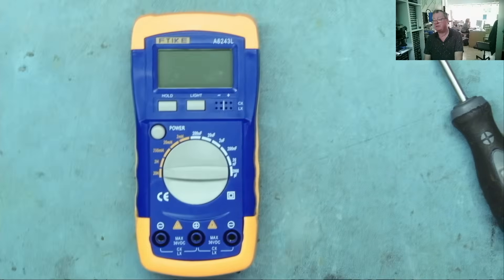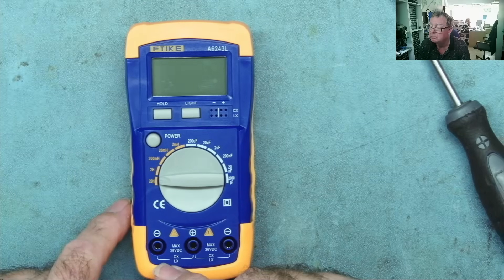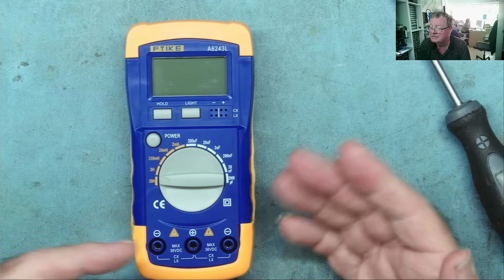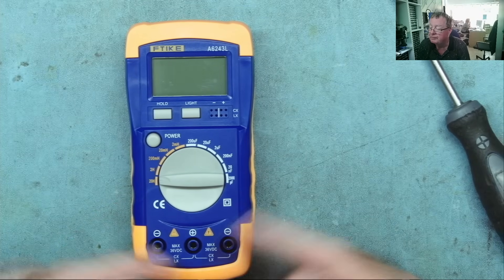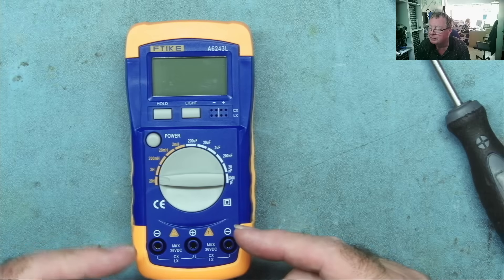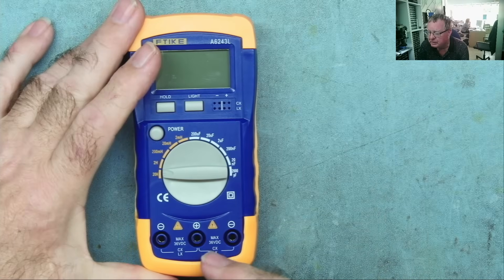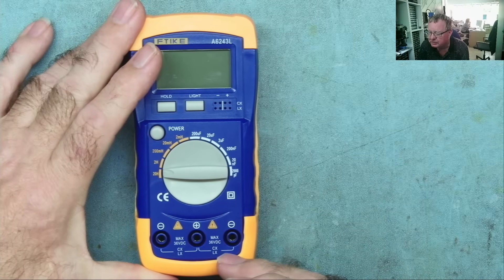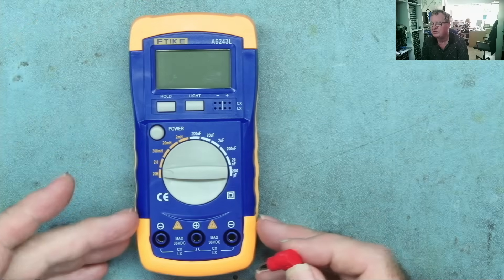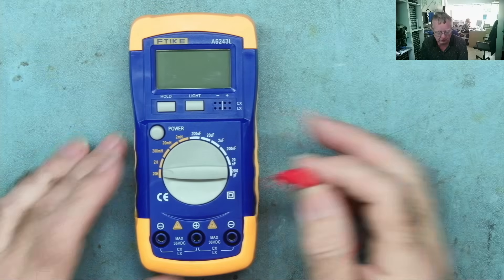You can plug little inductors and capacitors into here. CXLX plus minus, interestingly. Maximum 36 volts, so obviously you need to make sure capacitors are discharged before using this one. I'm actually wondering if one side is for capacitors and one is inductors. I mean, they're both marked the same, interestingly.